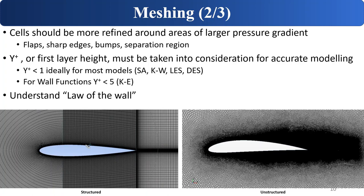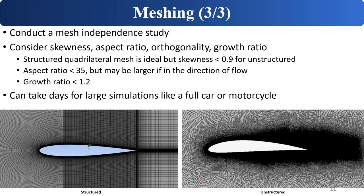Y+ or first layer height must also be taken into consideration for accurate modeling. In general, Y+ should be less than one for most models, including the Spalart-Allmaras, k-omega, LES, and DES models. There are ways to increase Y+ values to decrease computational demand using wall functions, commonly found in k-epsilon models but also used in k-omega SST — in that case you probably still want Y+ less than five. Understanding the law of the wall helps explain why Y+ less than one is needed for accurate boundary layer calculation.